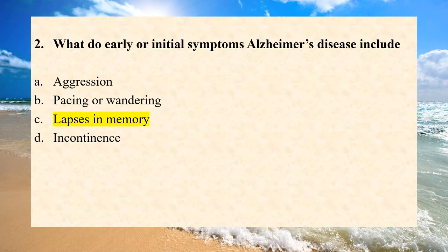Answer is C. Lapses in memory. It is an initial symptom which a patient with Alzheimer's disease will have, where the person forgets things that he or she should have remembered.